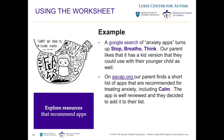While Googling, our parent also found another site that makes some recommendations. At aacap.org, they find an app called Calm. It's well reviewed, so they add it to their list. At this point, our parent feels like they have enough apps to try out. They hit pause on the research step and get ready to move on to the next.